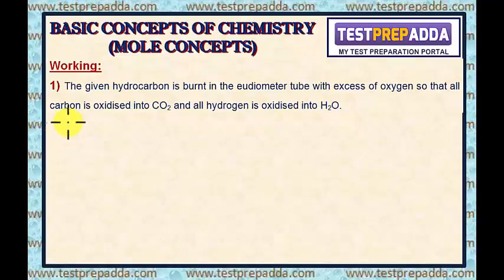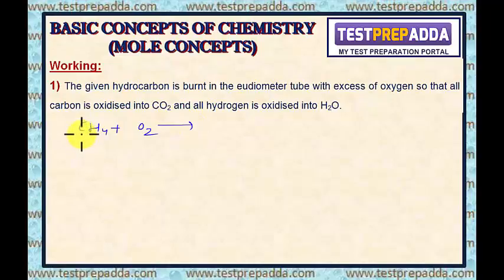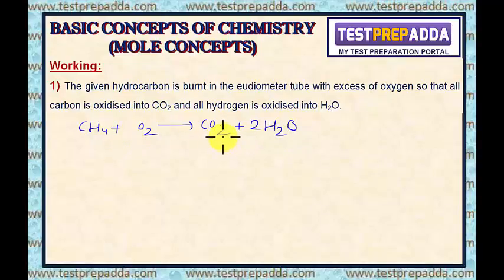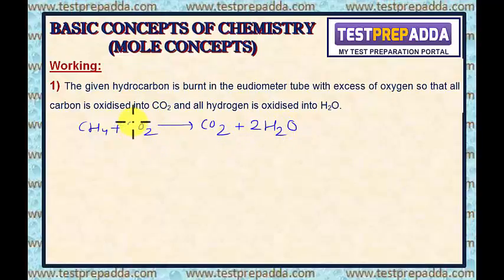Let me take an example. CH4 plus O2. How many carbon atoms are there in CH4? 1. So I will write 1 CO2. How many hydrogen atoms are there in CH4? 4. So I will write 2 H2O, because H2O already contains 2 hydrogen atoms. Now balancing of oxygen: 2 from CO2 and 2 from H2O gives total 4 oxygen atoms. Since it is O2, we divide 4 by 2, giving 2 O2.